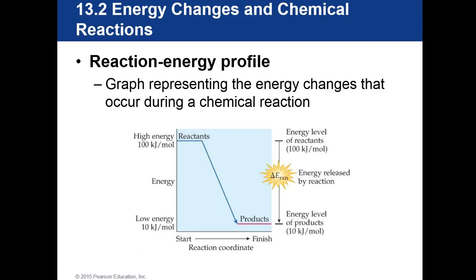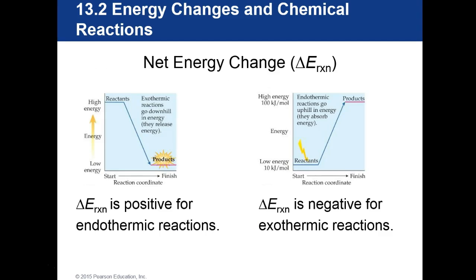Let's look at the energy reaction profile — this is a graph that represents the energy change that occurs during a chemical reaction. If reactants start at a high energy and end at a low energy, energy is released during the reaction. The net energy change is positive in endothermic reactions and negative for exothermic reactions. You will need to remember that.